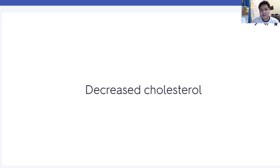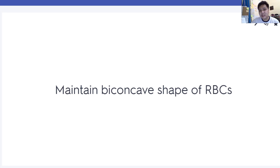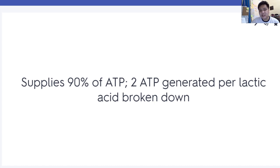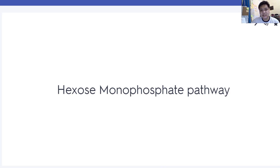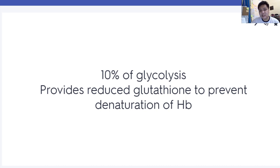Spectrin and actin maintain the biconcave shape of RBCs. Spectrin is the framework of the RBC, and a deficiency or problem in spectrin causes hereditary spherocytosis. The Embden-Meyerhof pathway supplies 90% of ATP — 2 ATP are generated per glucose, with lactic acid created. The hexose monophosphate pathway provides reduced glutathione to prevent denaturation of hemoglobin.